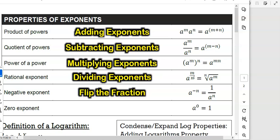Rational exponent, dividing the exponents. Negative exponent, flip the fraction, change the sign of the exponent. And then zero exponent, it equals 1, as long as the base isn't 0.